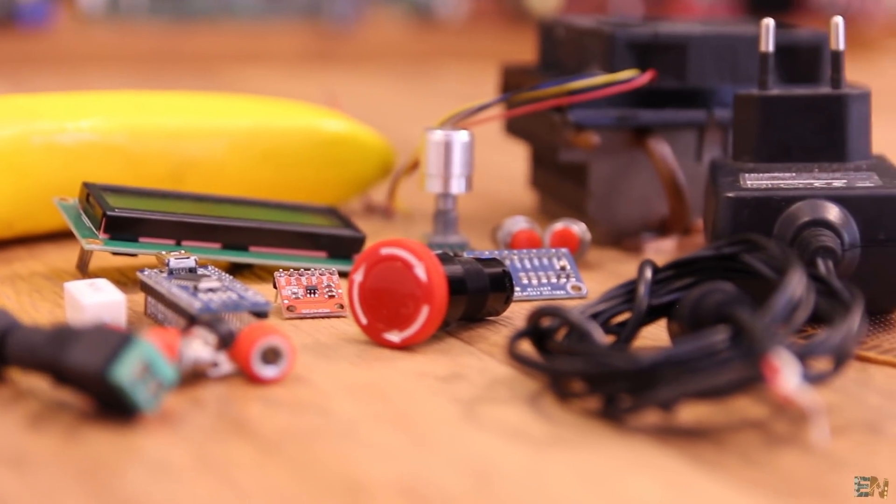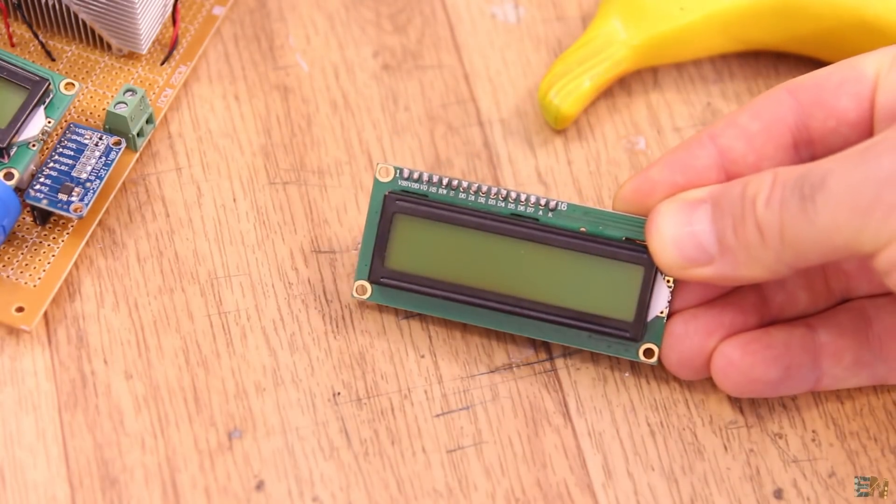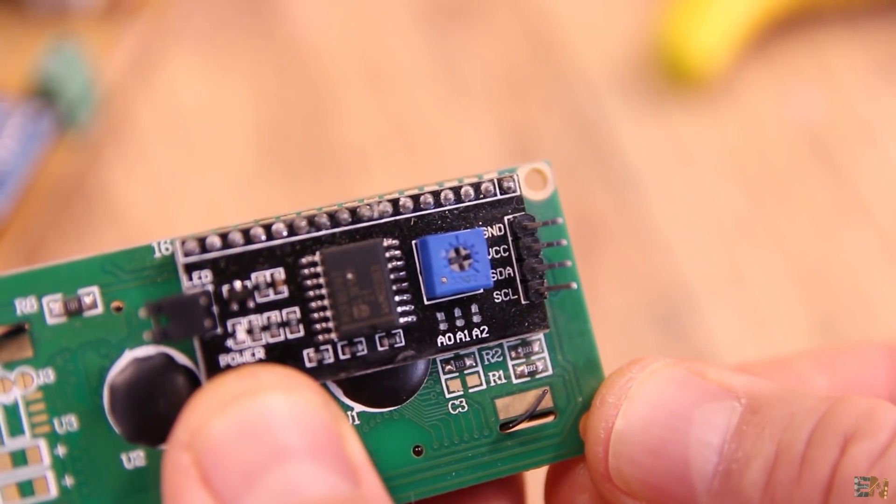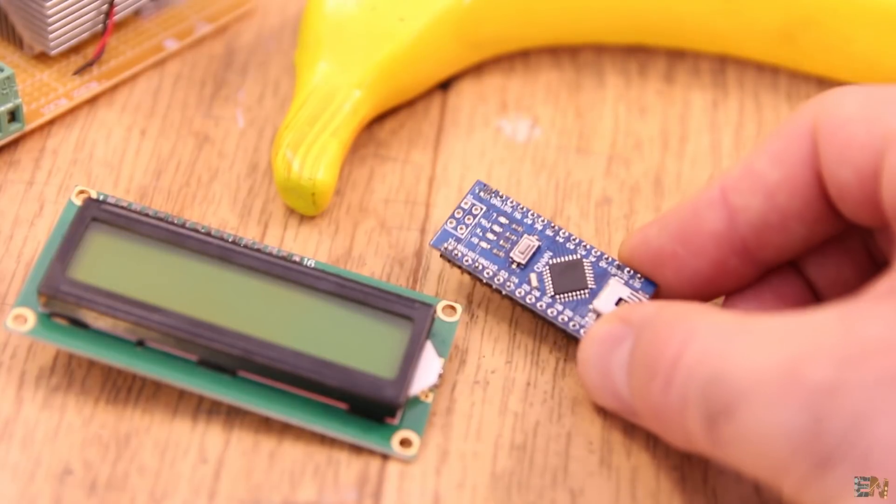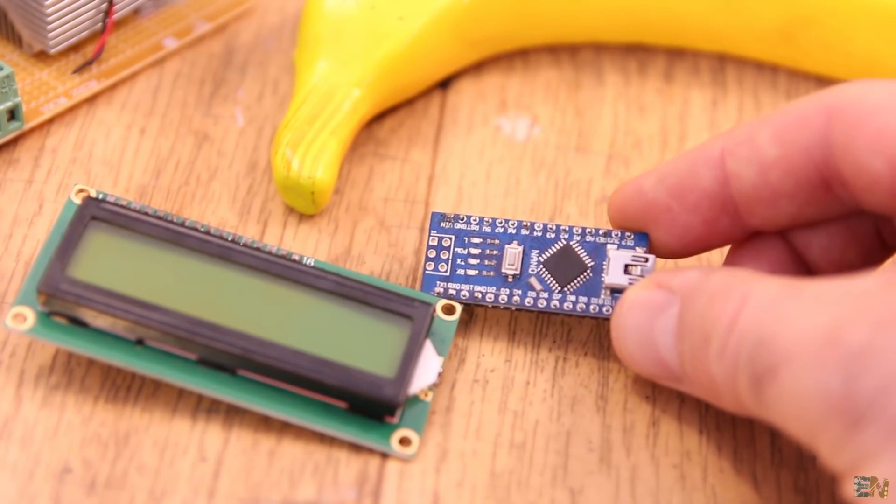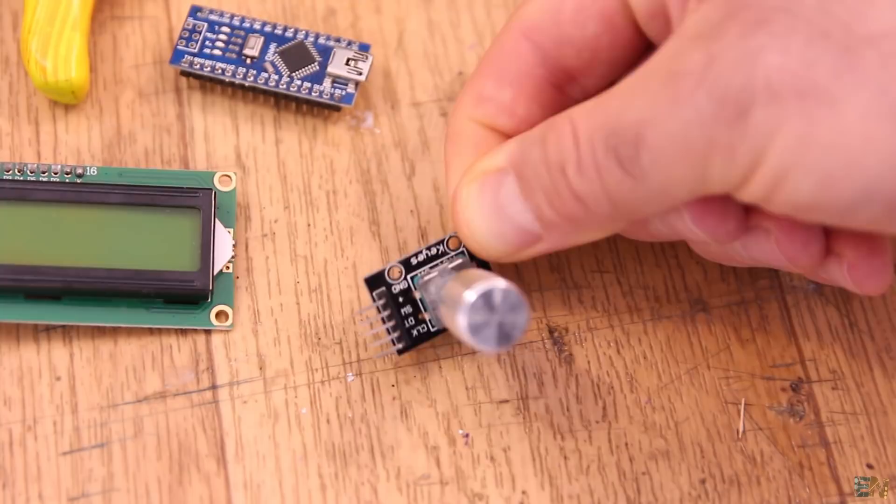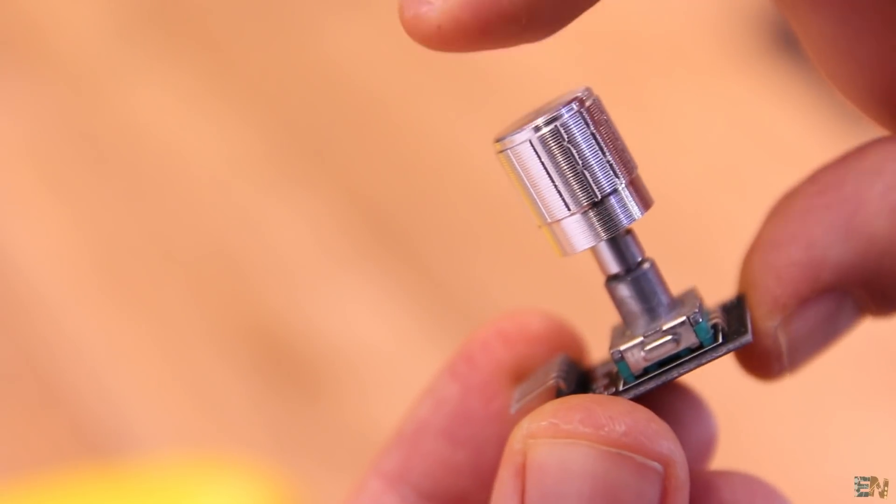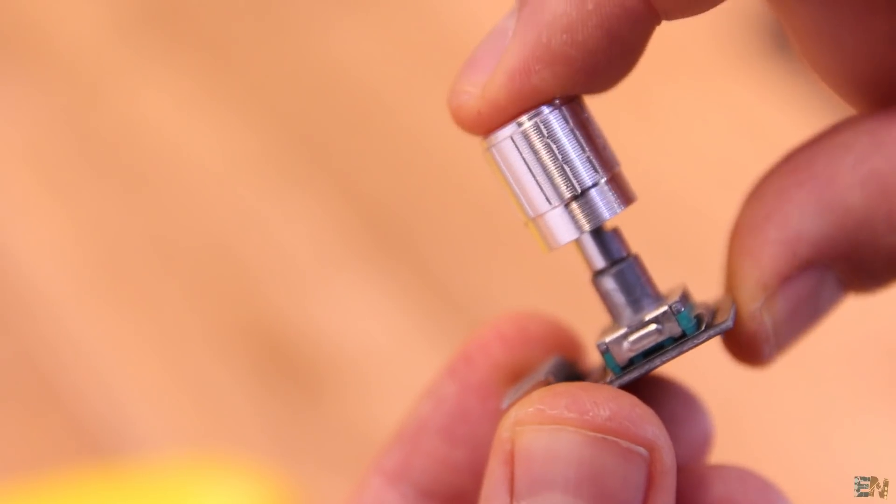I will print the values on this type of LCD screen that has an I2C communication so using only 2 wires we can print the data. The brain of the controller will be an Arduino Nano of course. To control the menu, I will use a rotary encoder and some extra push buttons. This type of encoder also has a push button inside that we can use.